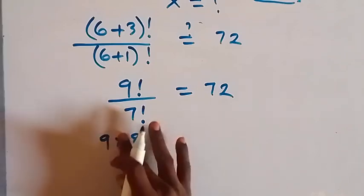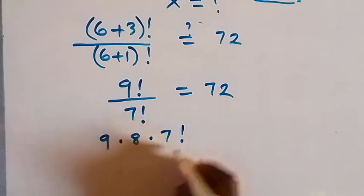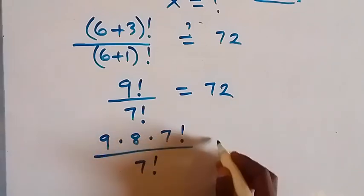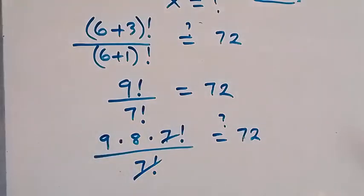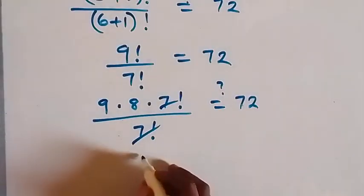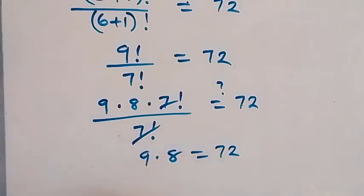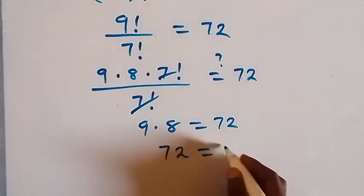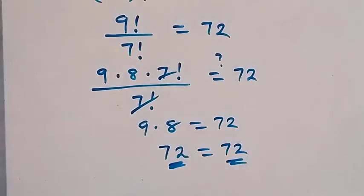times 7 factorial, over 7 factorial, equals 72. The 7 factorial cancels out, and what remains is 9 times 8. And 9 times 8 is 72, which equals 72. We have the left-hand side equal to the right-hand side